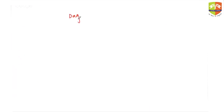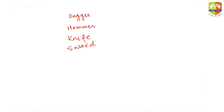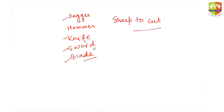Next: dagger, hammer, knife, sword, and blade. Hammer is the right answer because hammer is used to knock something, while knife, sword, blade, and dagger are all used to cut something. Dagger, knife, sword, and blade all contain something sharp to cut something. Hammer is to knock — hence the odd one out is hammer.